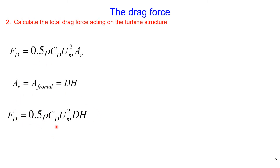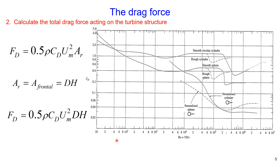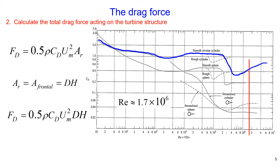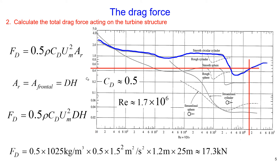To calculate the total drag force we need the drag coefficient. We will determine the drag coefficient using a diagram that shows the relationship of drag coefficient and Reynolds number, using the line for the smooth circular cylinder as our structure. With the Reynolds number estimated at 1.7 × 10⁶ we obtain a drag coefficient of approximately 0.5, and the total drag force is calculated to be 17.3 kilonewtons.